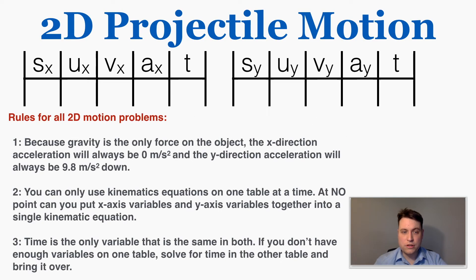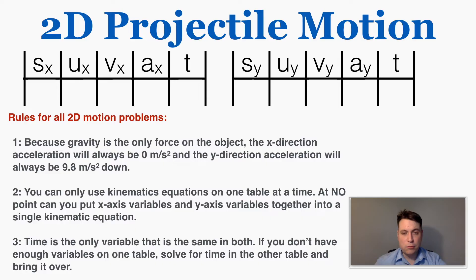Here are general rules for solving a 2D projectile motion problem. Because gravity is the only force, the x-direction acceleration is always zero and the y-direction acceleration is always 9.8 m/s² downward — whether down is positive or negative depends on your setup, but it must be consistent. Second, you can only use kinematic equations on one table at a time — never mix x-axis and y-axis variables in a single equation. Third, time is the only shared variable. If you don't have enough variables on one table, solve for time on the other table and bring it over. You need at least three kinematic variables to use the kinematic equations.